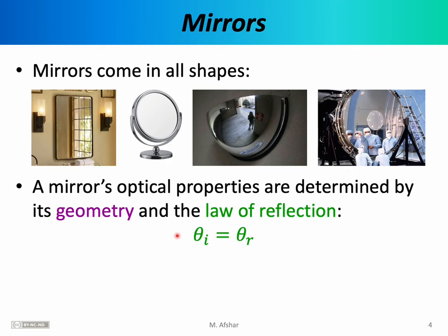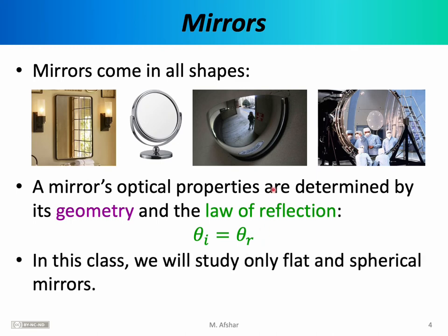What makes the optics of mirrors somewhat complicated is the fact that rays of light must interact with curved surfaces. Also, knowing what one ray is doing is often not enough to understand what we actually see, so this equation must be applied multiple times to multiple rays of light. We will eventually learn how to handle the optics of curved surfaces. For the time being in this class, we want to limit ourselves only to flat and spherical mirrors. Once you understand how spherical mirrors work, extending your knowledge to those other shapes will not be too difficult.